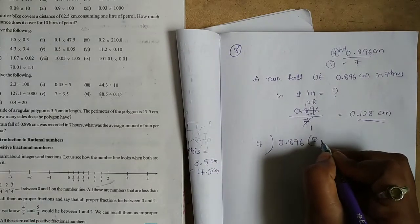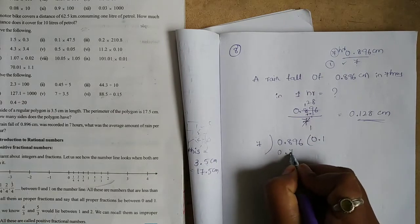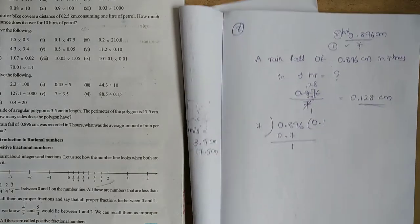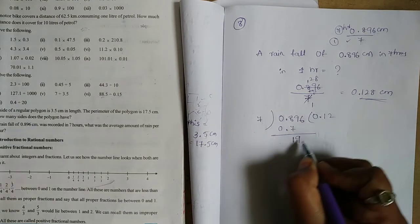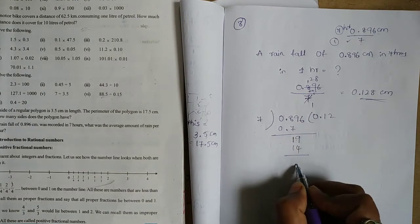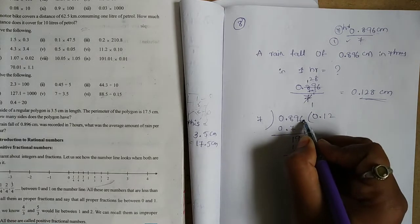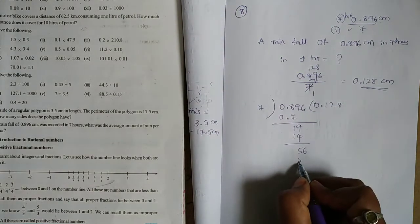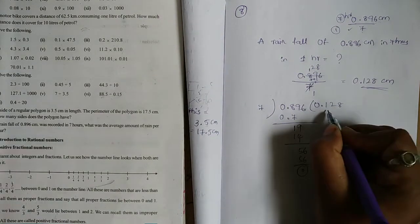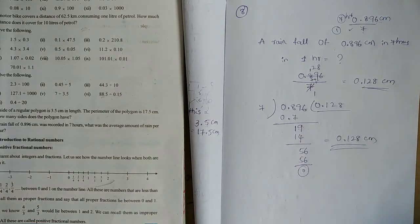Here we have 1. Let's take a look at this. 7 times 2 is 14. Here is 5. 19 minus 14 is 5. 9 minus 4 is 5. Here is 6. 7 times 8 is 56. The remainder is 0. So, quotient is the answer. 0.128 cm is the answer.